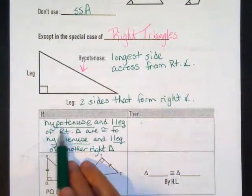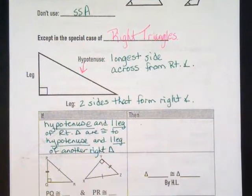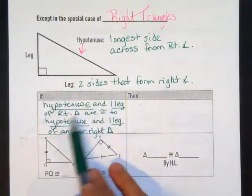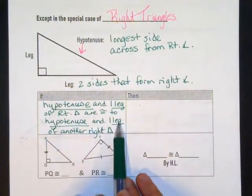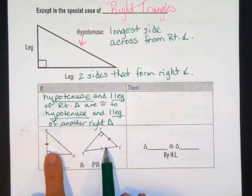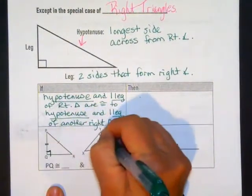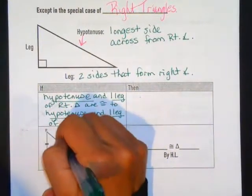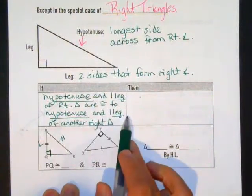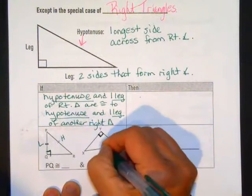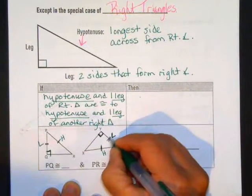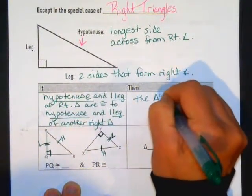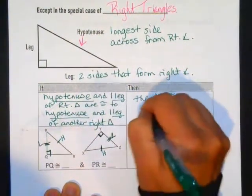Here's our conditional statement — go ahead and pause the video to copy this down. If the hypotenuse and one leg of a right triangle are congruent to the hypotenuse and one leg of another right triangle, here's my hypotenuse and here's my leg, congruent to this hypotenuse and another leg — those legs are congruent — then the triangles are congruent by what we're going to call the HL theorem.